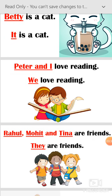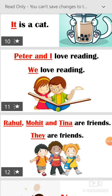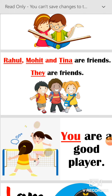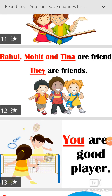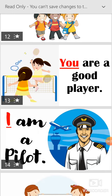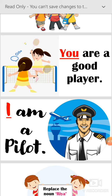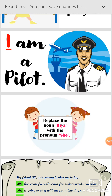'Peter and I love reading' — here we are talking about two people, Peter and the speaker, so together they become 'we': 'We love reading.' 'Rahul, Mohit, and Tina are friends' — one person is talking about three other persons, so all together they are called 'they': 'They are friends.' 'You are a good girl' — here 'you' is the subject pronoun. 'I am a pilot' — here 'I' is the subject pronoun.